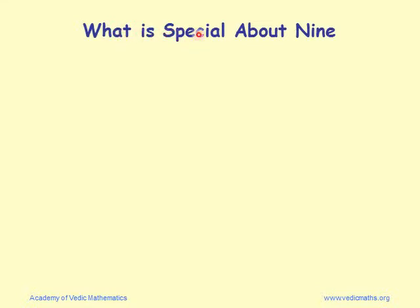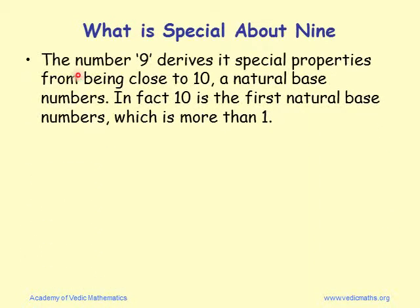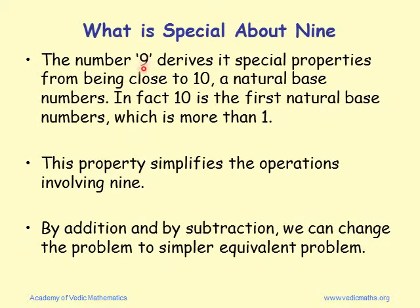Let's see what is special about 9. Number 9 derives special properties from being close to 10 — it is exactly 1 less than 10. 10 is a natural base number and it is the smallest base number which is more than 1. We can use this property that 9 equals 10 minus 1 to simplify operations involving 9.